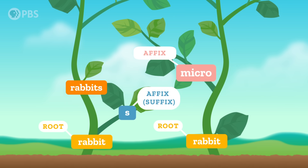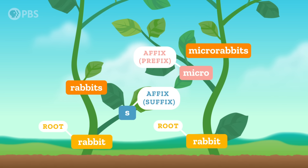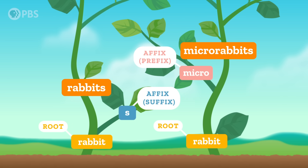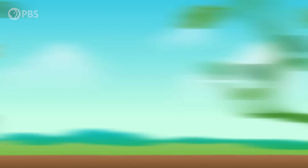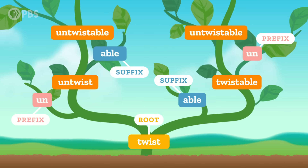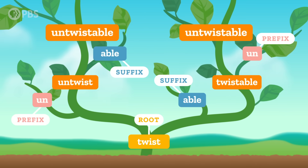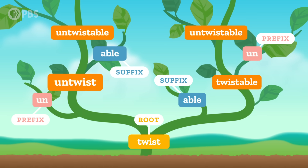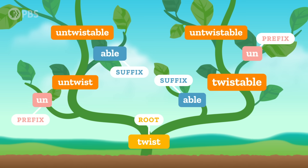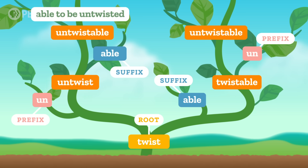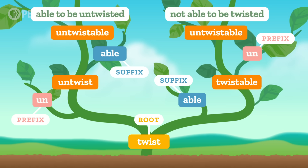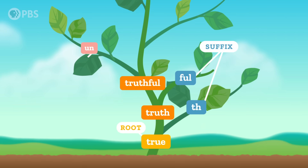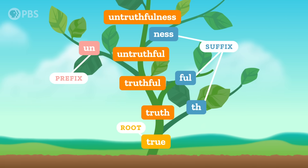If the word has an affix stuck on before the root, it's called a prefix. To extend our plant metaphor, when we add a morpheme to the root, this new unit becomes the stem for the next morpheme. We can also have a word with several affixes at once, like untwistable, which has the prefix un-, the root twist, and the suffix -able. This word's meaning depends on whether untwist is a stem for -able, or whether twistable is a stem for un-. It could mean 'able to be untwisted' — that's untwist plus -able — or it could mean 'not able to be twisted' — that's un- plus twistable. Not every word with multiple affixes has more than one meaning, though. It all depends on how the word builds.